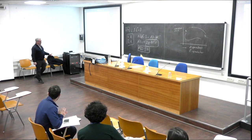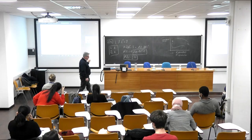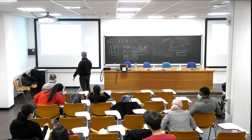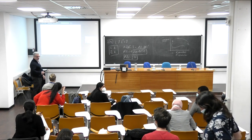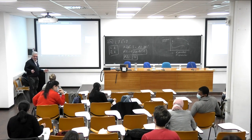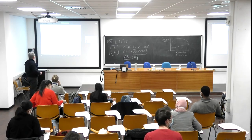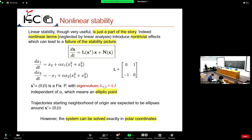The second part of the stability concerns nonlinear stability. Linear stability is very useful, but it's not enough sometimes — it's just part of the story — because nonlinear terms can change the scenario and introduce nonlinear effects that can bring about a failure of the linear stability.